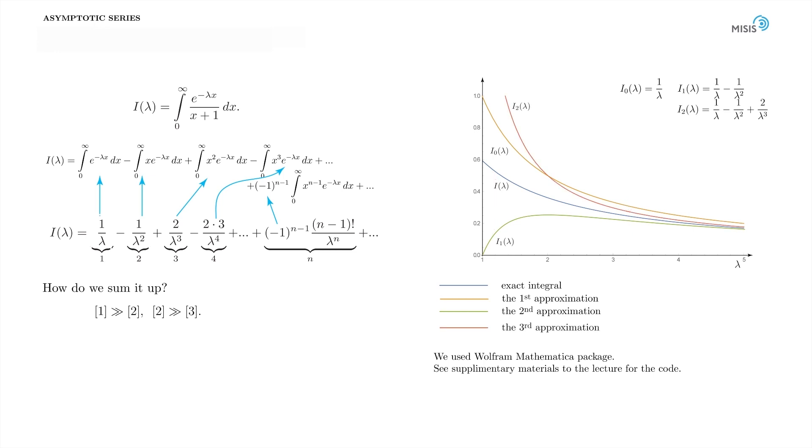Finally, the third order approximation, which is the sum of three first terms. And you can see that at small lambda, it's simply no good. But at lambda of the order of 5, this approximation works the best.